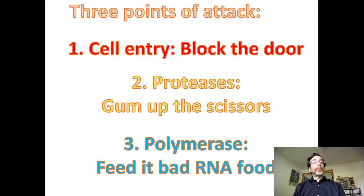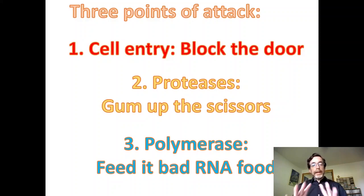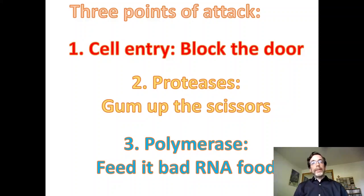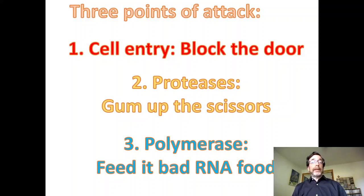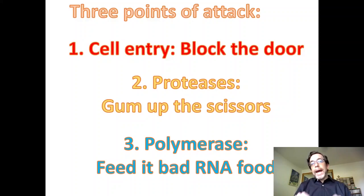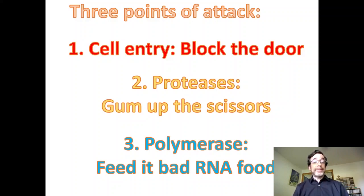So these give us three points of attack, and biochemistry will tell us how these work and how we can make a chemical that messes up the viral biochemistry. Cell entry: we can block the door, not let it get in the cell. Proteases: we can gum up the scissors — the virus has to cut itself out, like a sheet of fabric that needs scissors to cut out the different parts; let's gum up the scissors. And then there's the polymerase itself — the thing that makes more. It needs RNA food, it needs nucleotides. So let's feed it bad food and not let it make its bad product for us.